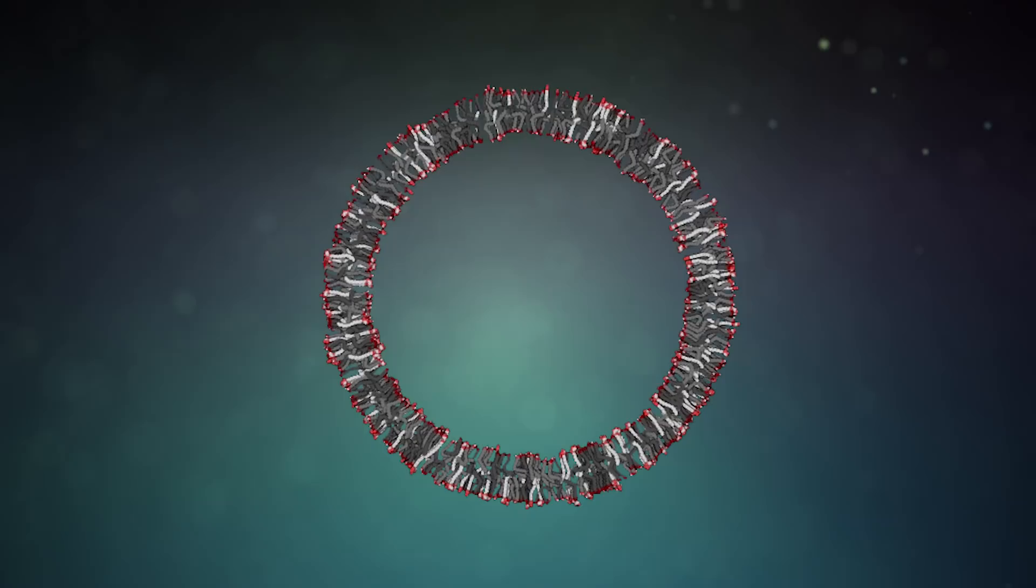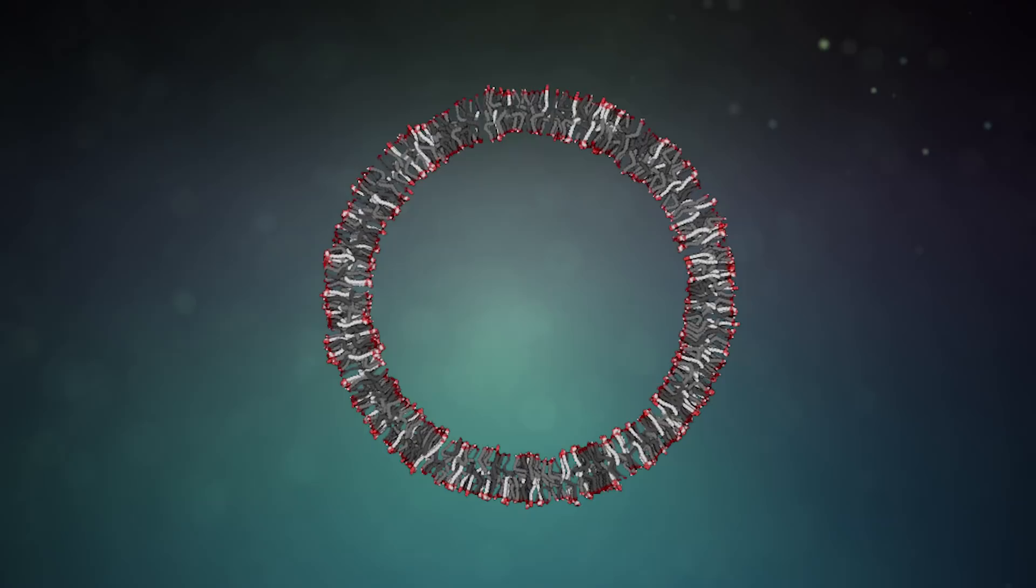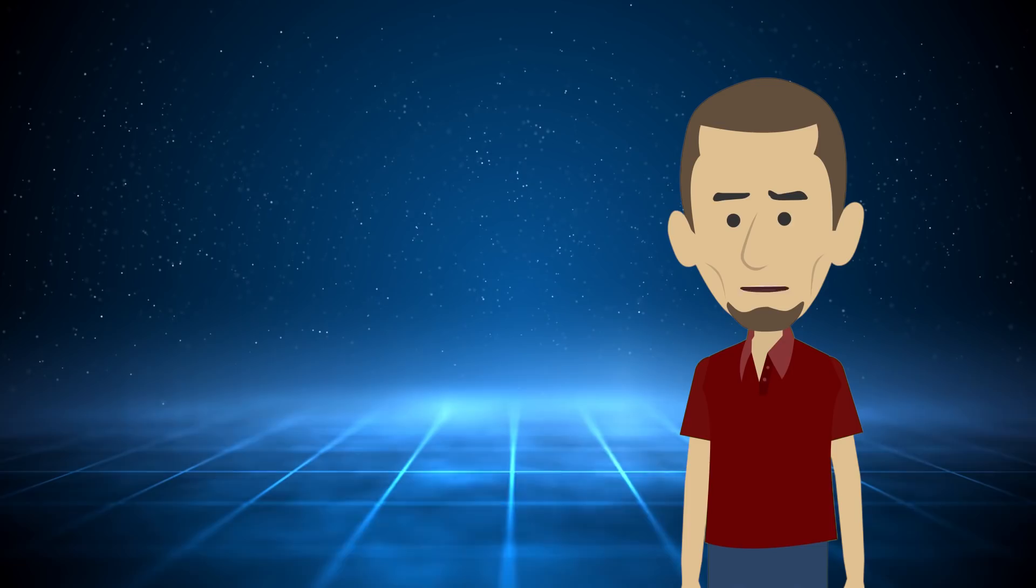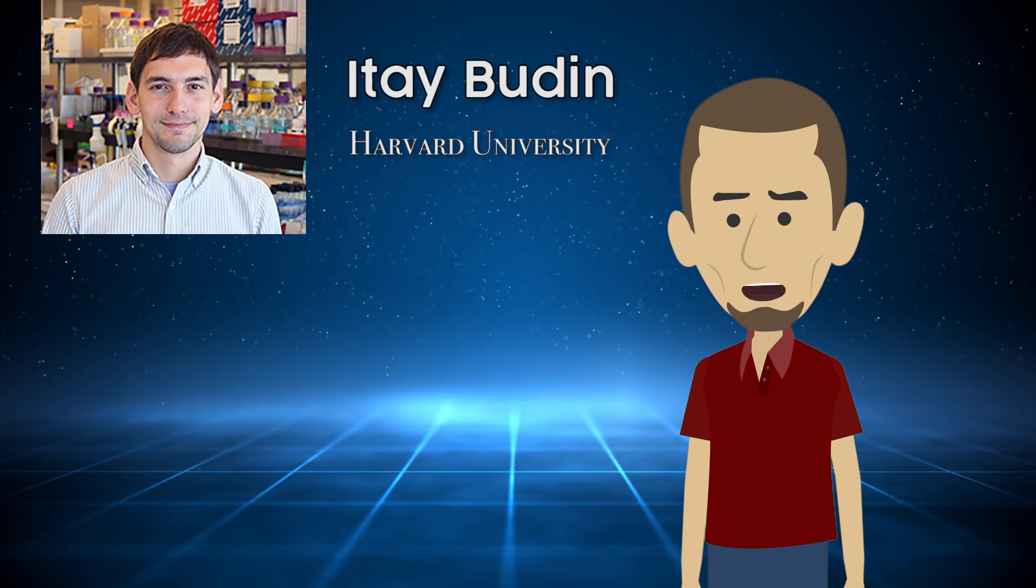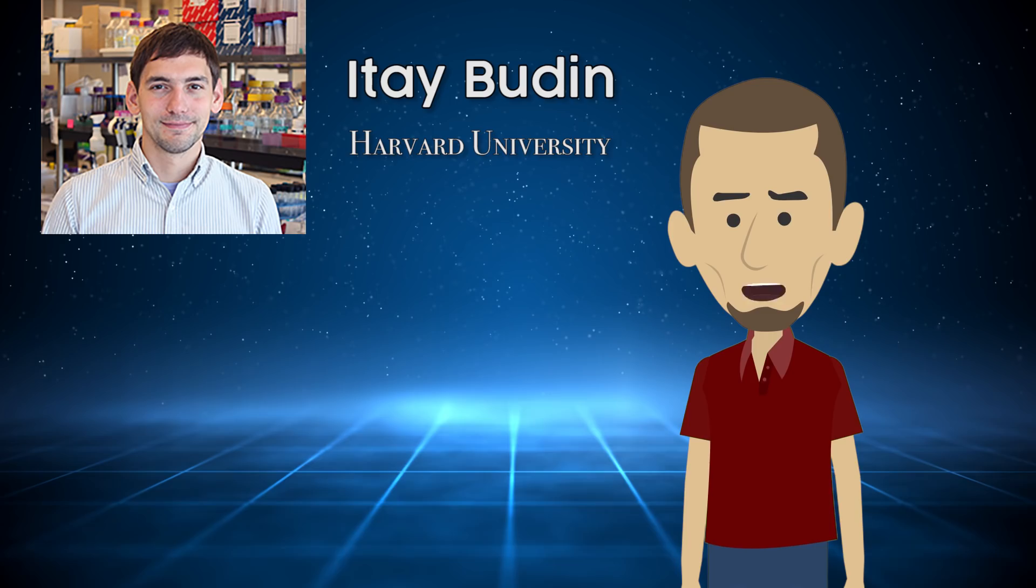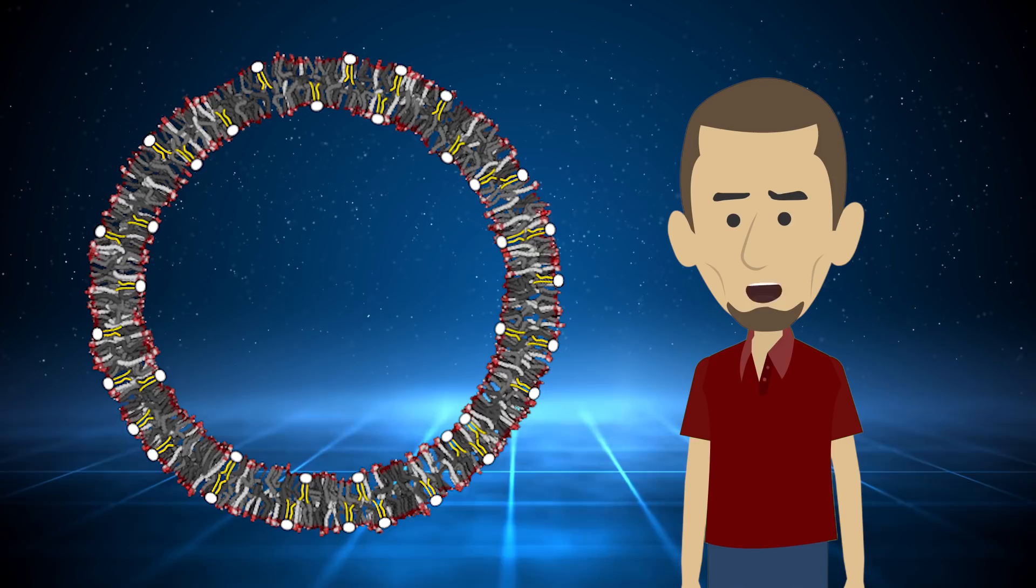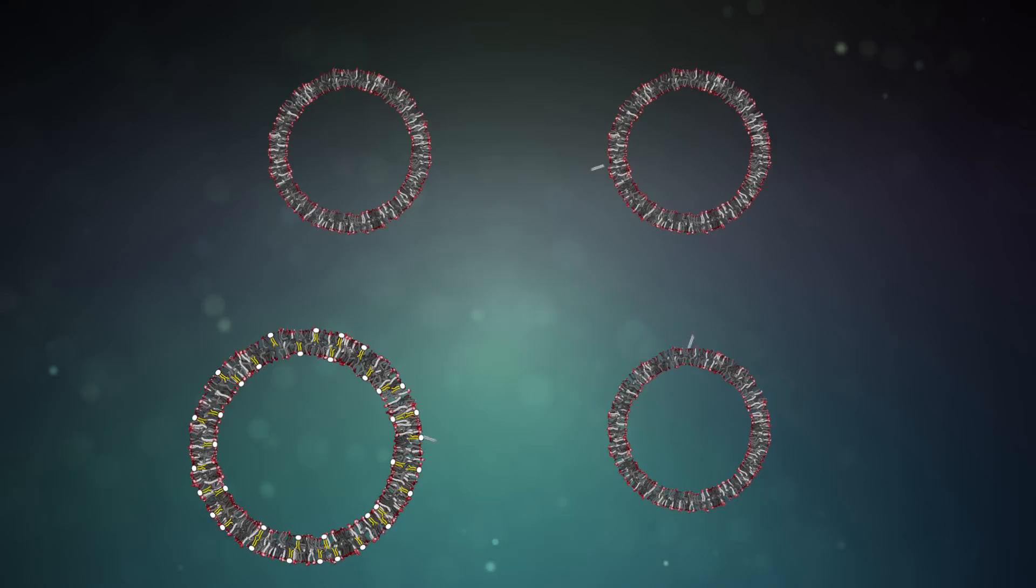But why on earth would a cell with a fatty acid membrane start incorporating phospholipids? Is there any advantage to having this intermediary stage? What evolutionary pressure would lead it down this path? Ite Buden at Harvard University's Shostak lab discovered that having even just a small amount of phospholipids mixed into a vesicle's membrane made the structures more stable. They still absorbed fatty acids from neighboring cells at the same rate, but the presence of the phospholipids slowed down the rate that they lost their own fatty acids, leading to cell growth.